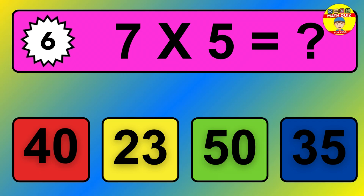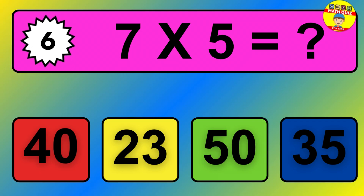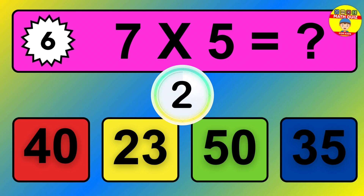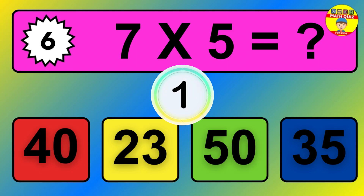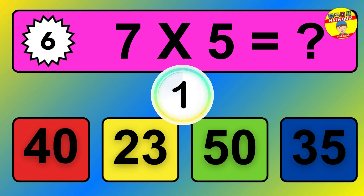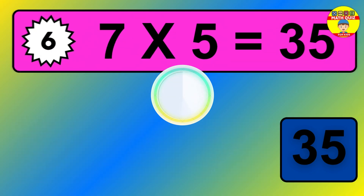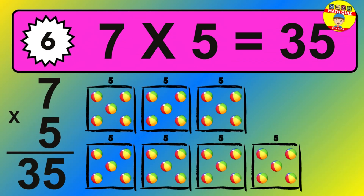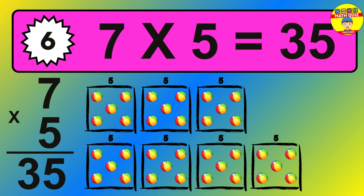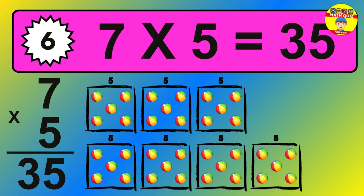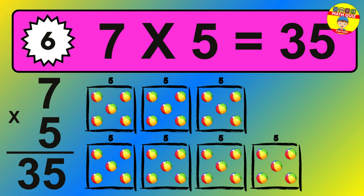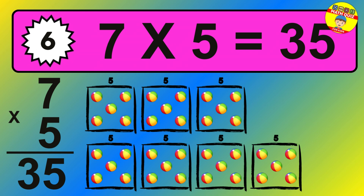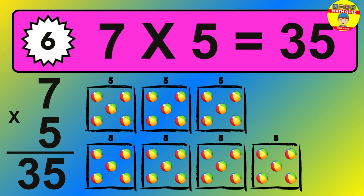Question 6. 7 times 5 equals what? The answer is 7 times 5 is 35. To calculate, we have 7 groups with 5 balls each one. So how many balls do we have? 35 balls.